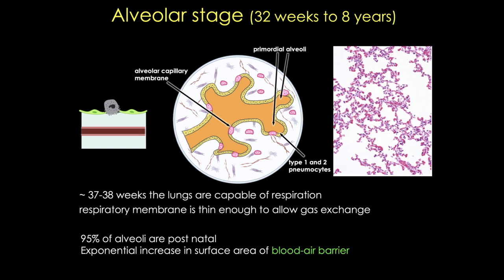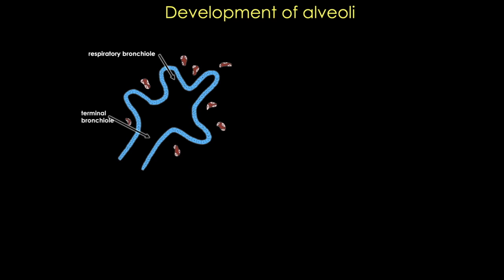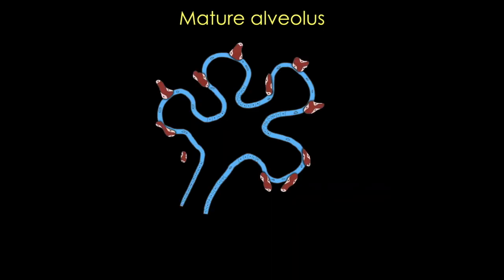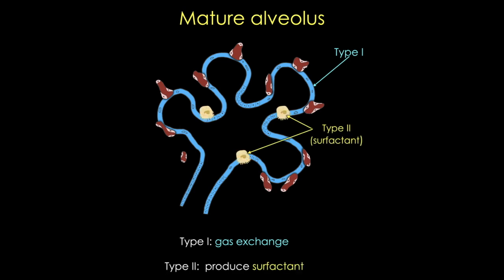Let's dig into the development of alveoli for a quick moment. In this first cartoon, we're roughly in the terminal sac stage where the epithelium is still mostly cuboidal, but we see capillaries beginning to bulge into the respiratory bronchioles and terminal sacs. As the epithelial lining starts to thin to a squamous layer, the adjacent capillaries make contact with cells in the alveolar sacs. A mature alveolus has epithelium composed of type 1 pneumocytes forming the blood-air barrier with capillary endothelial cells, and type 2 pneumocytes producing surfactant. Primordial alveoli enlarge as the lungs expand, and more primordial alveoli are formed by the formation of more septae or walls between existing alveoli, greatly increasing the surface area.